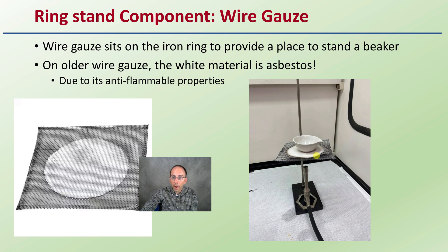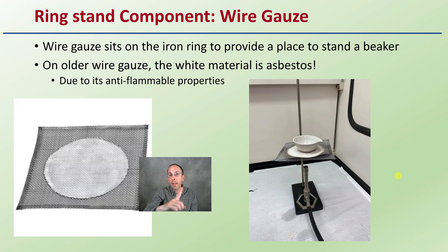The ring stand could also have gauze wire on it. Instead of a wire triangle, sometimes gauze wire is used. However, the white material can contain asbestos, so be careful of that — this is why they're typically not used as often as the simple ceramic triangle, which is used simply to elevate something above a flame.